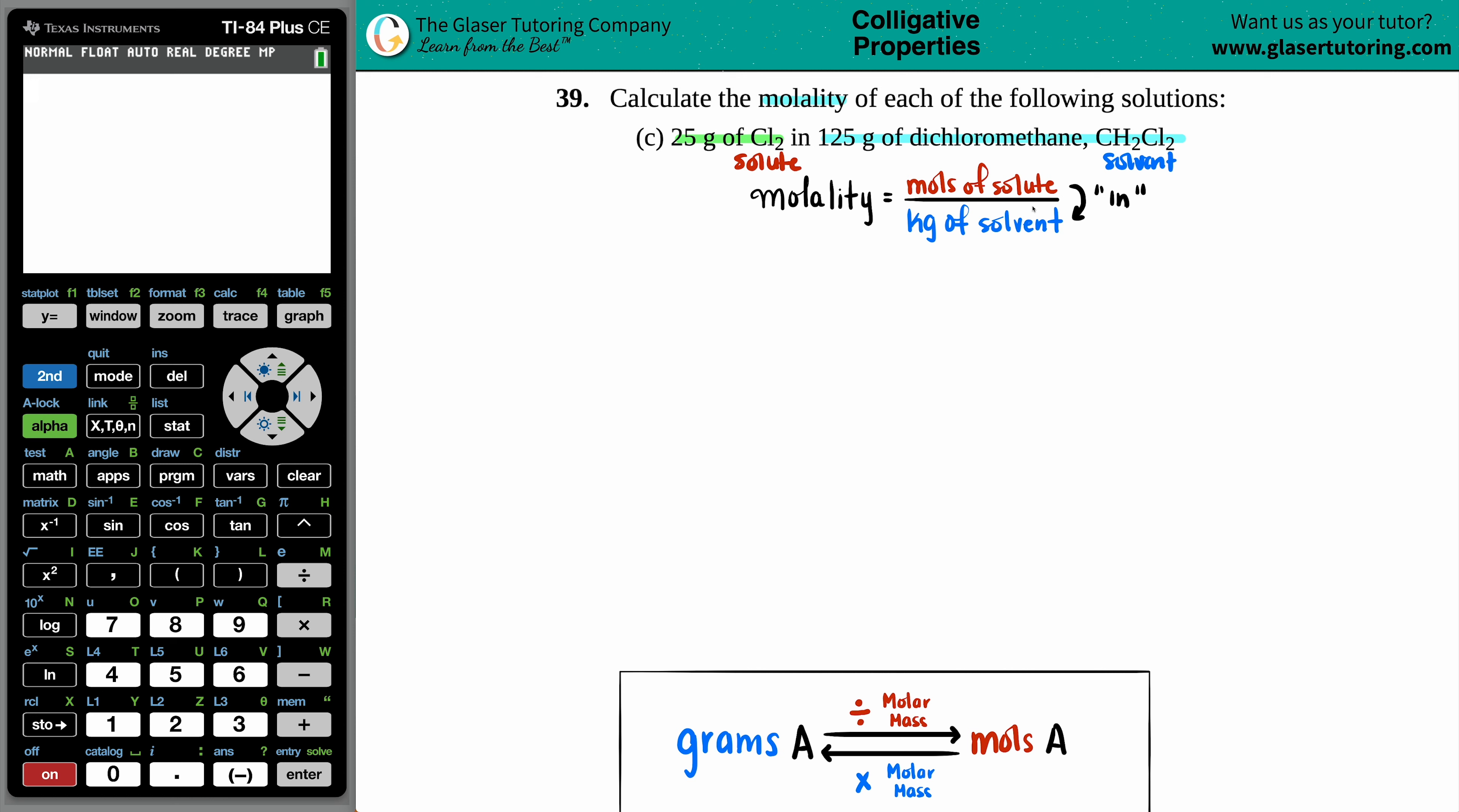So now we would know what unit we have to convert to. The 25 grams of the Cl2, since that's the solute, I want it in moles. So let's start with that one. 25 grams of Cl2. I don't want grams anymore because the formula calls for moles. So let's convert to moles of Cl2.